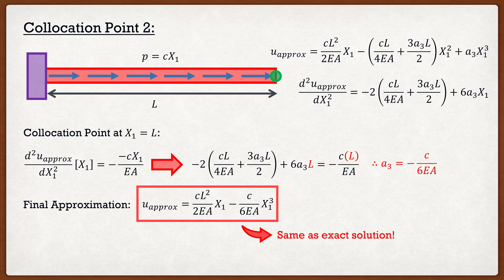That's the point collocation method. Like I said, it's a nice trolly method — virtual work and the Rayleigh-Ritz method seem very complex with all the talk of potential energy and work done on the system, meanwhile this method just says: make sure the differential equation holds at certain points. Nice and easy. Thank you guys so much for watching, I really appreciate it. I will see you guys in the next lecture video.